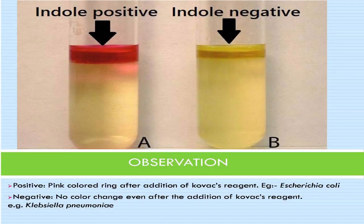Observation and interpretation: a positive result shows formation of a pink to cherry red ring in the reagent layer on top of the medium within seconds of adding the reagent. Examples of positive: E. coli, Bacillus, Haemophilus influenzae, Klebsiella oxytoca. A negative result shows no color change after addition of Kovac's reagent. Examples of negative: Klebsiella, Alcaligenes, most Bacillus, Bordetella, Enterobacter, Lactobacillus, and most Haemophilus species.